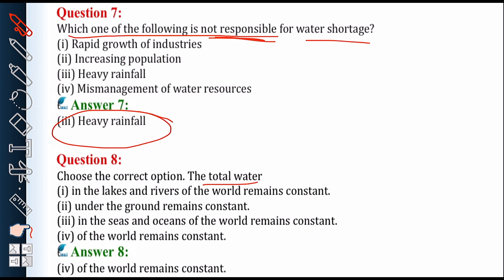Next is question number 8, choose the correct option: the total water of the world remains constant. The level in lakes, rivers, underground, and seas and oceans can vary — more or less — but the total water of the world always remains constant.